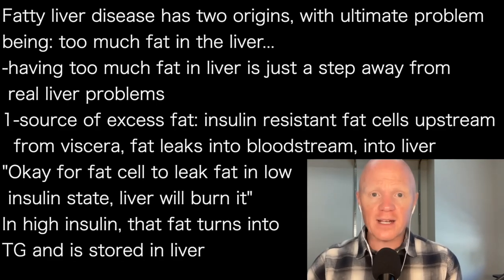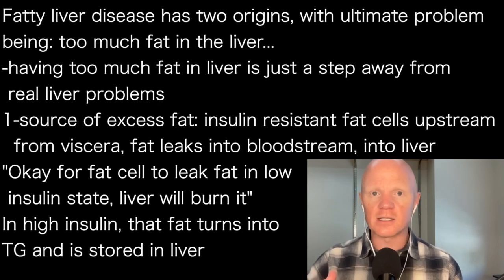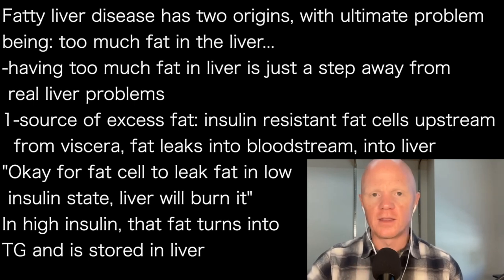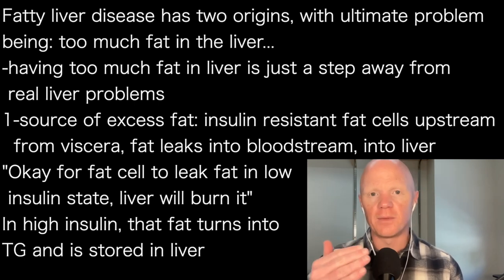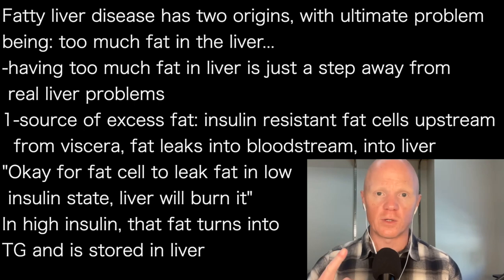Where does the fat come from? There are two sources for that fat. One source is insulin-resistant fat cells — fat cells that are upstream from the viscera. As they start leaking their fats in a state of high insulin, the liver will readily pull that in and store it.